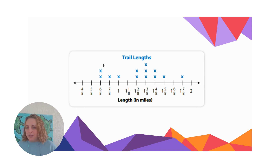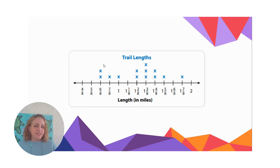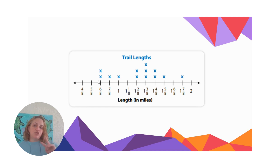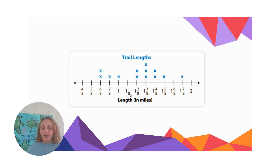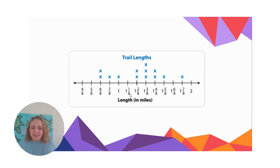What can we answer about this? How many trails are six eighths miles? We find six eighths on our line plot and count how many x's it has on top — there are two x's, so there are two trails that are six eighths miles. There's one trail that's seven eighths miles and one trail that's exactly one mile. Notice there are no x's over one and one eighth, meaning there are no trails that were one and one eighth mile.